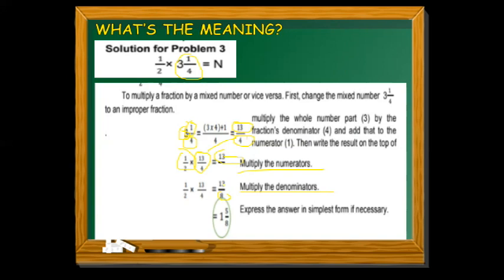To convert thirteen-over-eight to a mixed number, divide the numerator by the denominator: 13 divided by 8. Eight goes into 13 once; 1 times 8 equals 8; 13 minus 8 equals 5. So the whole number is 1, the remainder 5 becomes the numerator, and 8 remains the denominator. The answer is 1 and five-eighths.